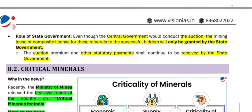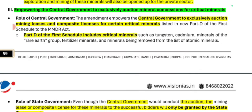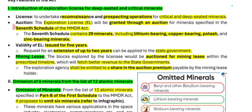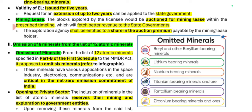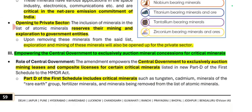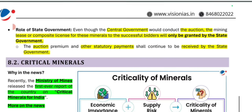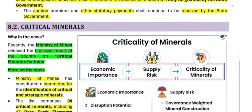For non-critical minerals, the exploration license is granted by the state government, and the auction premium or other statutory payments will be received by the state government. So this is all about the role of the central and state governments. We have seen that deep-seated and critical minerals have specific rights, and 6 minerals have been removed from the atomic list.